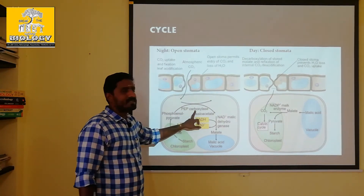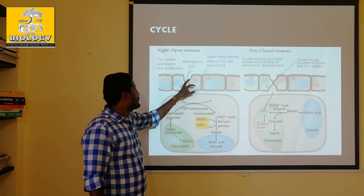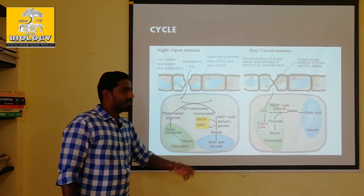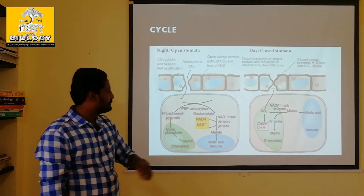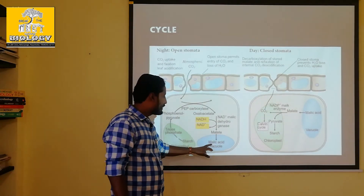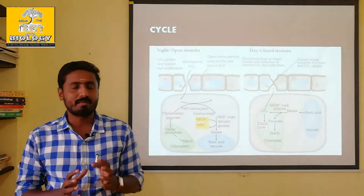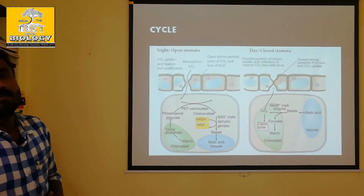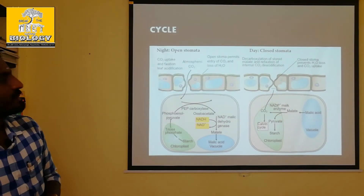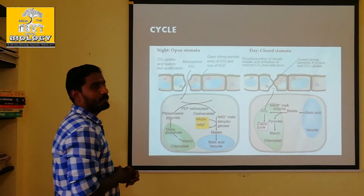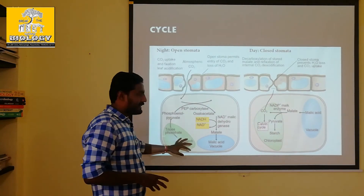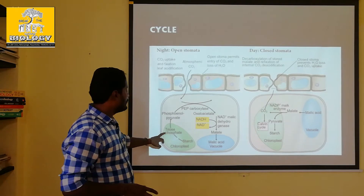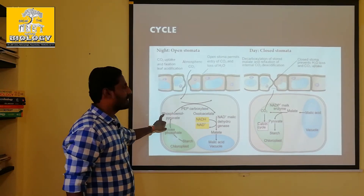PEP, phosphoenolpyruvate, absorbs carbon dioxide. In the middle step, there is oxaloacetic acid formed. This then becomes malic acid. The malic acid will be stored inside the vacuole — it is stored inside the vacuole.